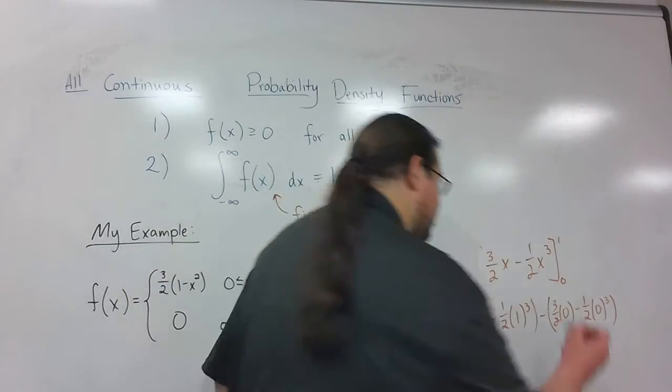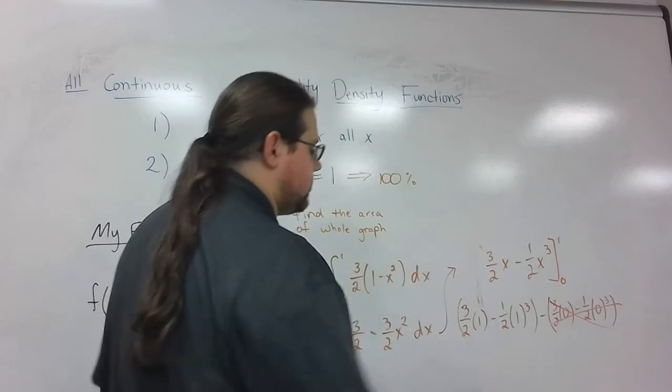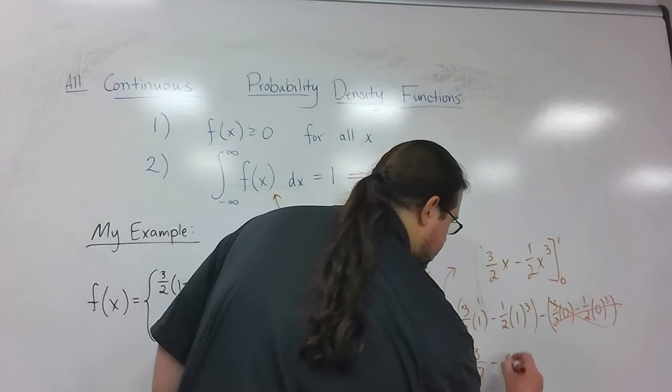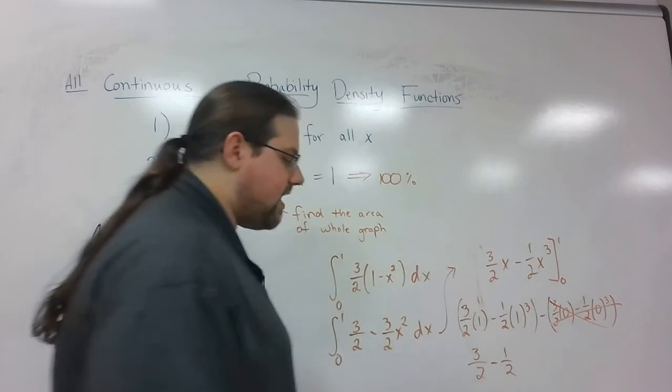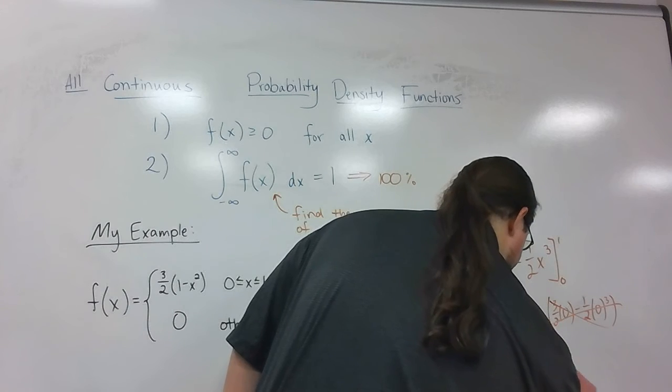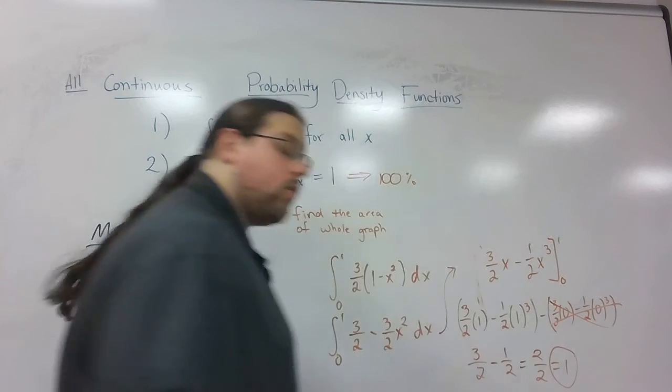So all that stuff with 0 at the end, that's just 0. So 3 over 2 times 1 is 3 over 2. 1 cubed is 1. So we're multiplying by 1, we get 1 half. 3 over 2 minus 1 over 2 is 2 over 2, which is just plain old 1. And so that works.